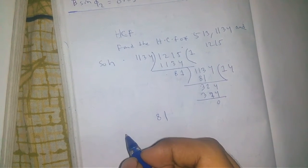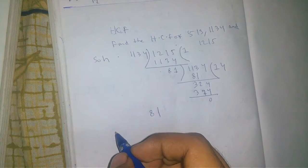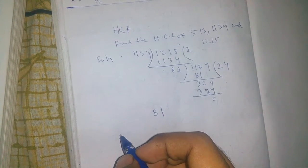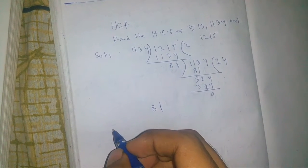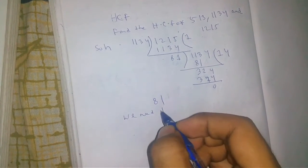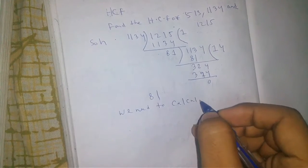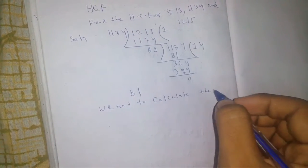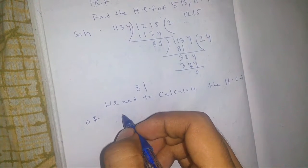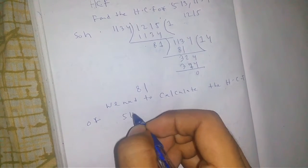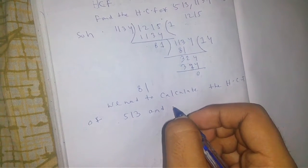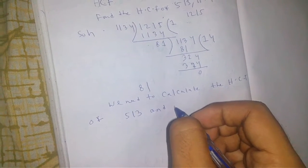To find the total HCF of these three numbers - 513, 1134, and 1215 - we need to calculate the HCF of 513 and the HCF of 1134 and 1215, which is 81.